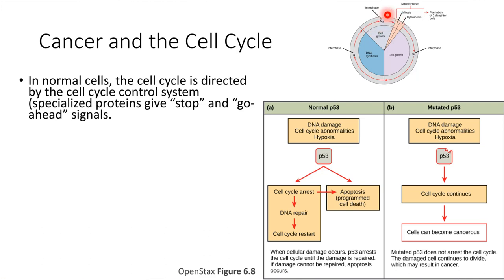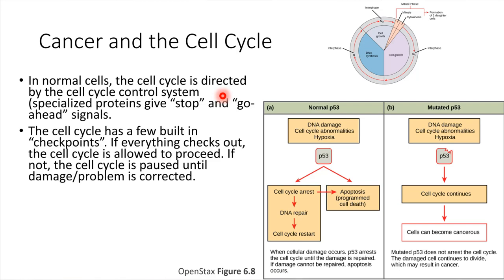If there was a mistake in DNA replication — if maybe one of the chromosomes didn't duplicate properly — that's something the cell would want to recognize. If there's a problem, it would not be good to proceed through cell division, because that would essentially propagate the problem into all of the daughter cells. It would be better for the organism for that cell to just stop and not divide. So ordinarily, the cell cycle control system regulates this process at a few different checkpoints.